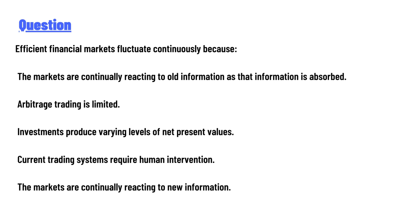The answer options for why efficient financial markets fluctuate continuously are: the market was continuously reacting to old information as that information is observed; arbitrage trading is limited; investments produce varying levels of net present values; current trading systems require human intervention; or the markets are continuously reacting to new information.